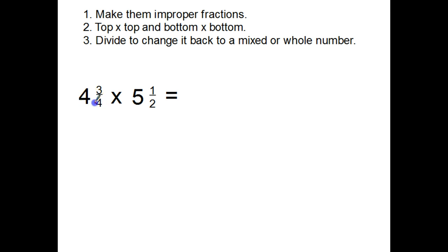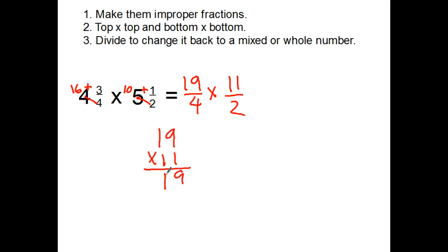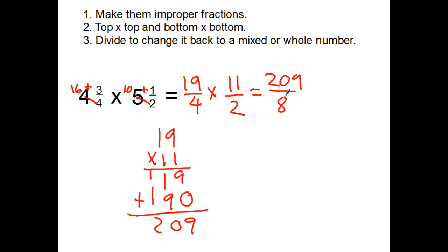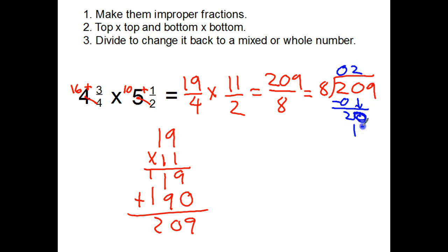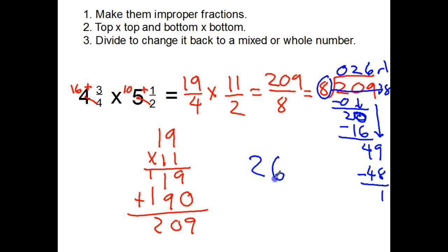Let's try another one. Four times four is sixteen, sixteen plus three is nineteen, so nineteen fourths. Five times two is ten, ten plus one is eleven, so eleven halves. We're getting a little bigger numbers. Nineteen times eleven is two hundred and nine, over four times two which is eight — two hundred and nine eighths. Dividing: no eights in two, two eights in twenty, two times eight is sixteen, remainder four, bring down the nine. How many eights in forty-nine? Six. Six times eight is forty-eight, remainder one. My answer is twenty-six and one eighth.